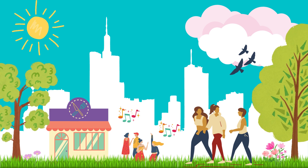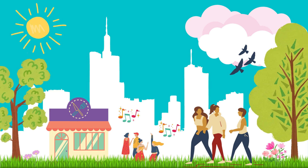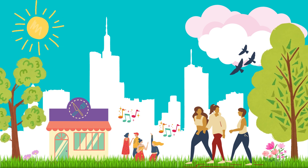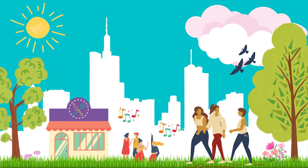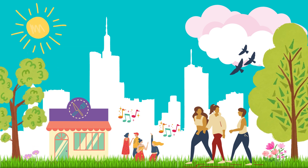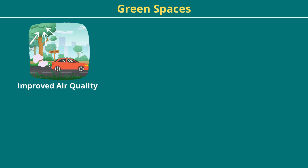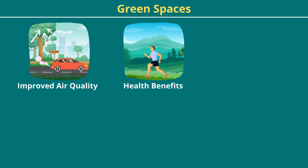For example, green spaces like parks and trees are not just urban decorations, because they help to improve the sustainability of the city. Improved air quality: trees can capture small particles and other pollutants from the air, as well as absorb carbon dioxide and produce oxygen.